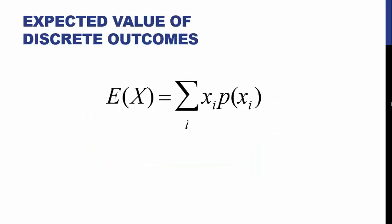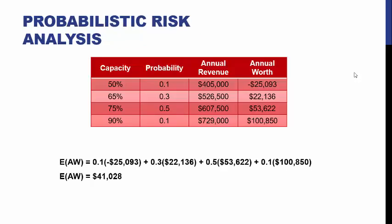The first value you need to know is the expected value of a discrete outcome — basically a weighted average. You multiply the value of the outcome by the probability of the associated outcome, do that for each possible outcome, and then sum them up. For example, at 50% capacity the probability is 0.1 and annual worth is approximately negative $25,000. At 65% capacity there's a 30% chance of happening with its associated annual worth. Summing all terms gives us $41,000 and a little extra, so on average we would expect to earn $41,000 on this project.